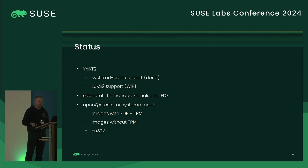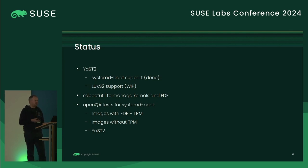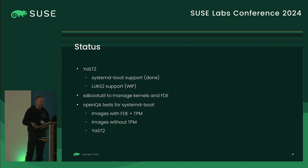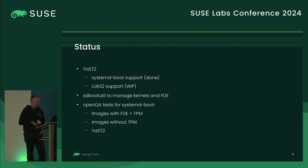Currently we can only provide images with the right LUKS setup, but we cannot yet provide YaST-based installation for customers. We have the sd-boot-util tool to manage kernels and full disk encryption. Managing kernels and initrds means we ensure the right kernel and initrds are in the boot EFI partition, since on the encrypted disk the bootloader cannot load them. For FDE, with every kernel update we need to recalculate the expected hashes so the next boot works. Fabian created many openQA tests for systemd-boot, and this covers images with FDE and TPM, images without TPM, and LUKS2 support.